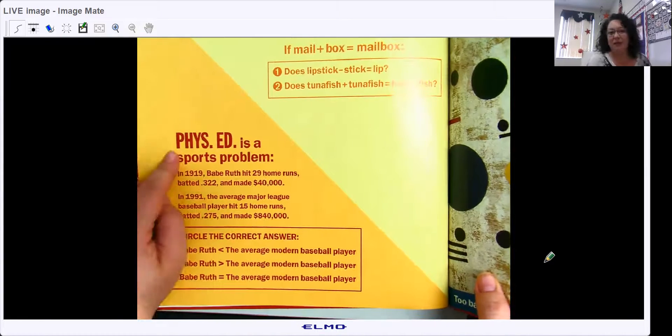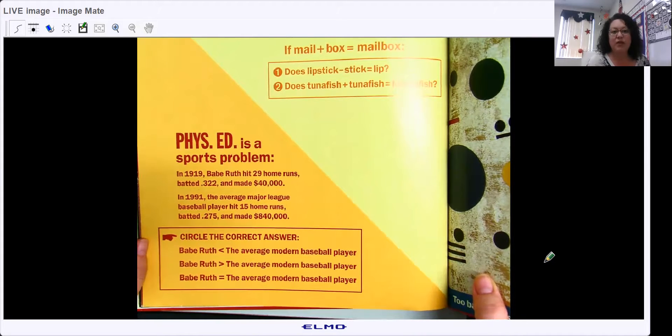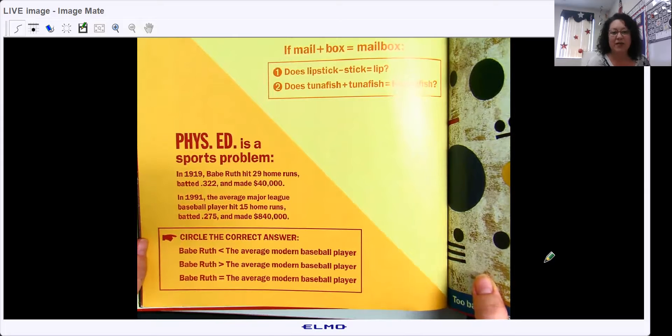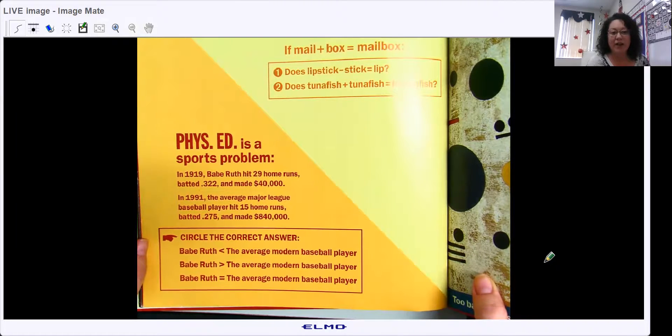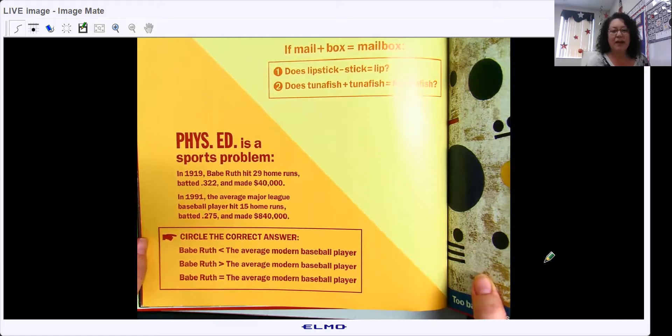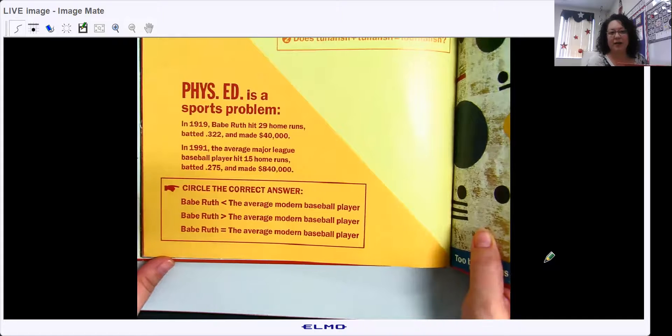Phys Ed, that's like PE, is a sports problem. In 1919, Babe Ruth hit 29 home runs, batted .322 and made $40,000. In 1991, the average Major League Baseball player hit 15 home runs, batted .275 and made $840,000.